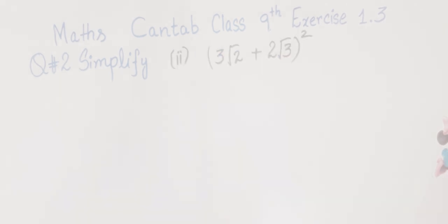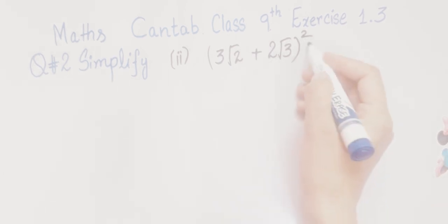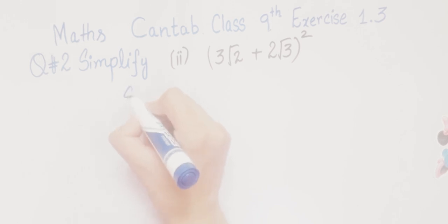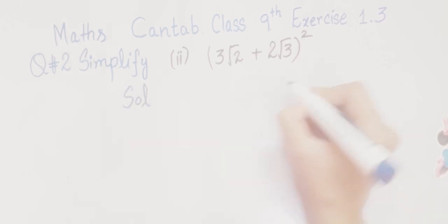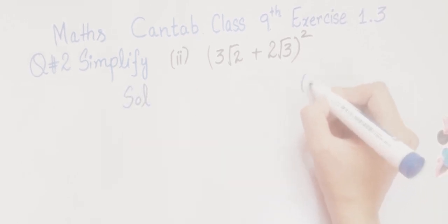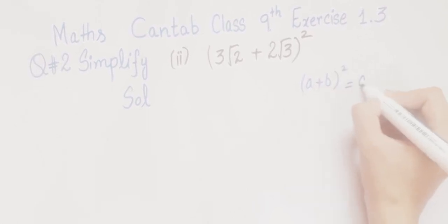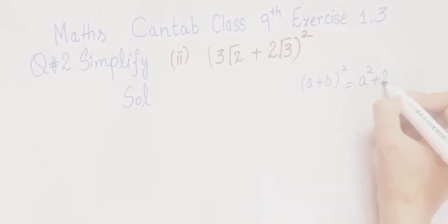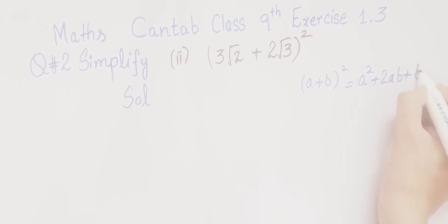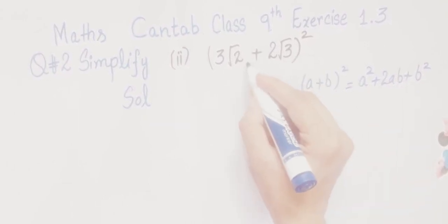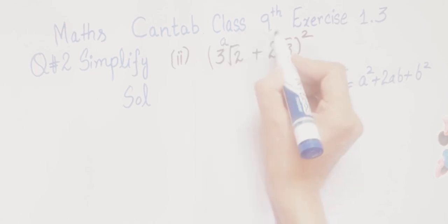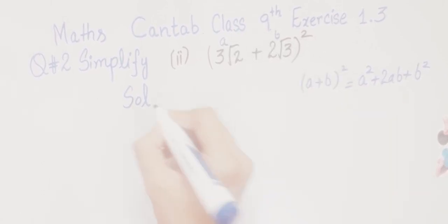Now we will do the second part. The second part is (3√2 + 2√3) whole squared. We will solve this. We know that (a + b)² is equal to a² + 2ab + b². We will use this formula here, where the first term is a and the second term is b.